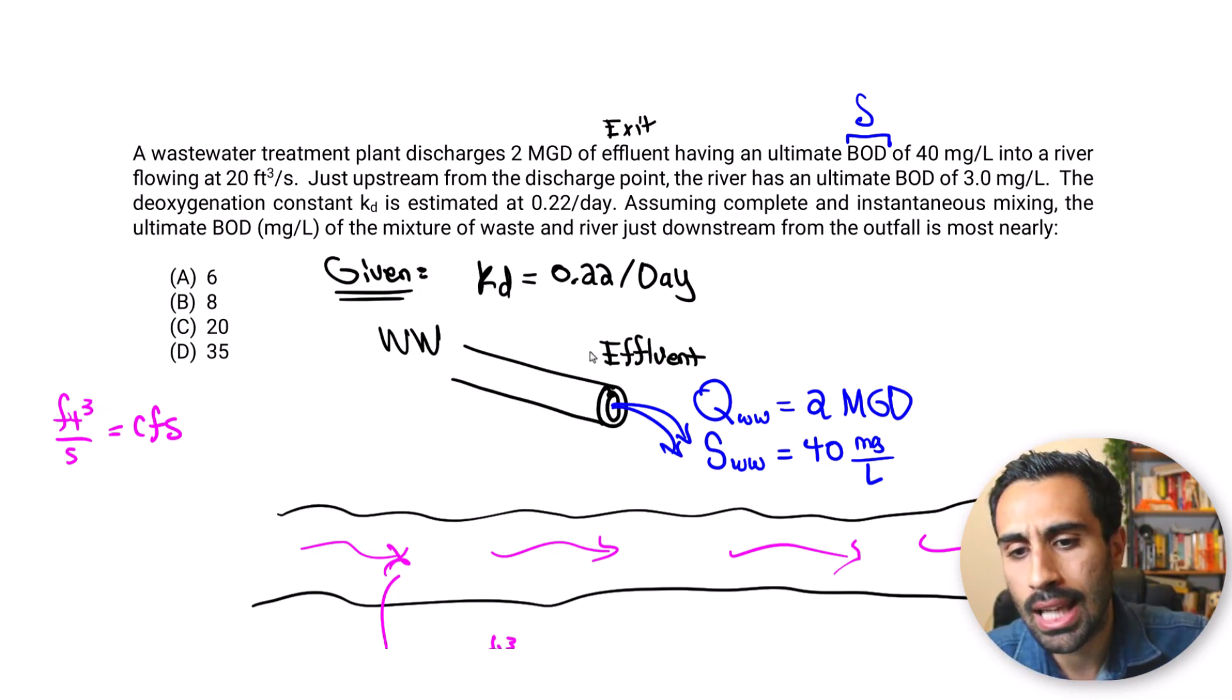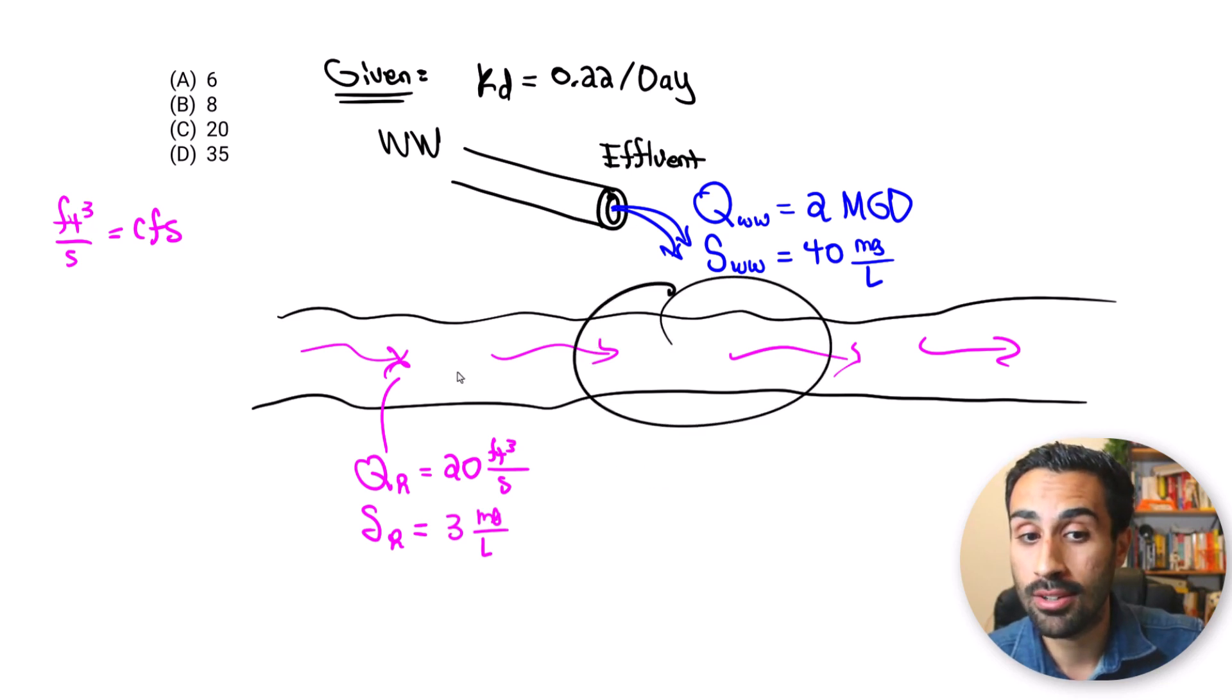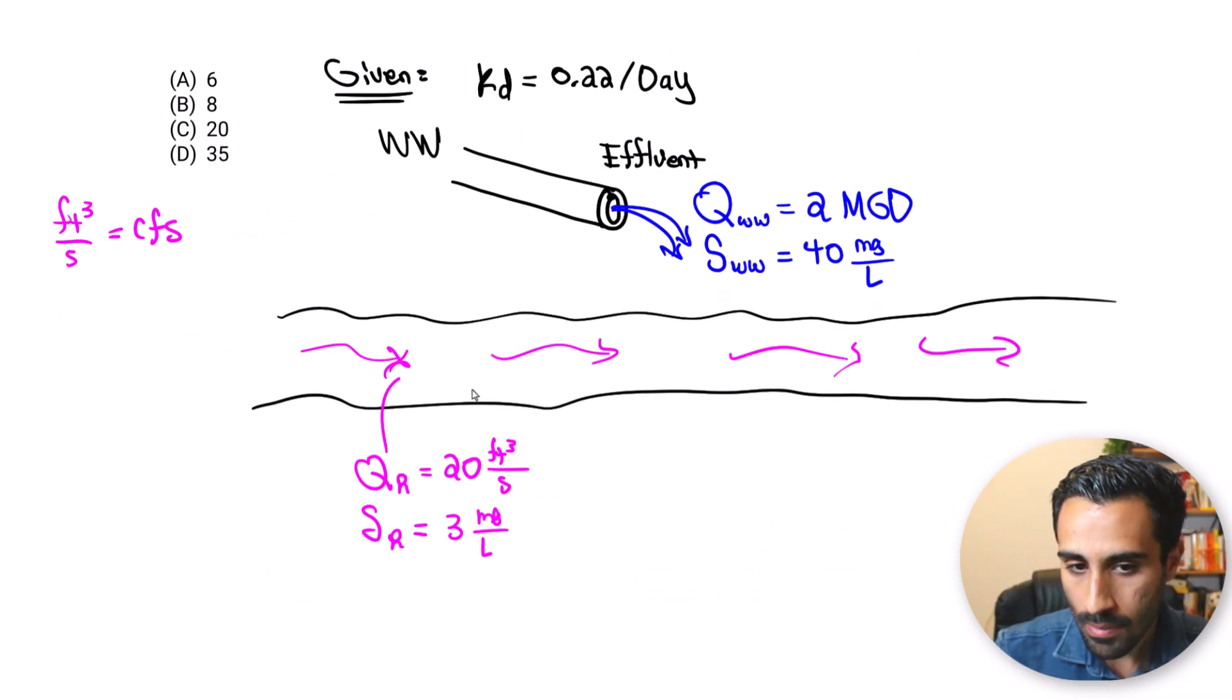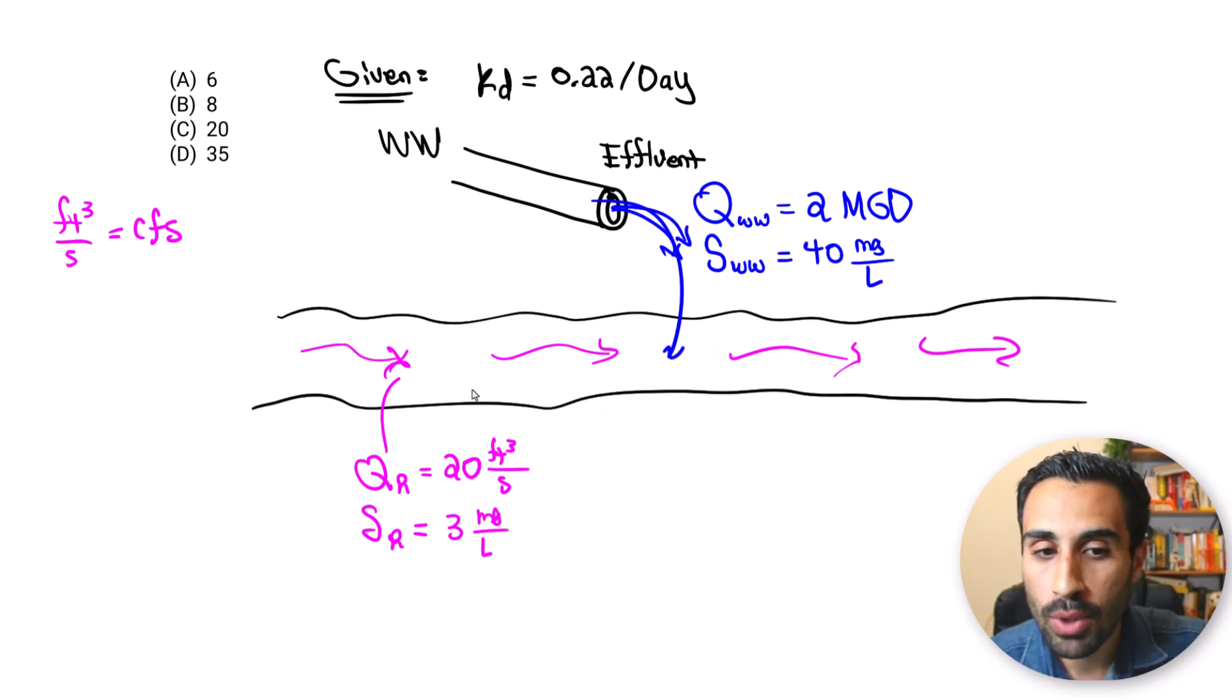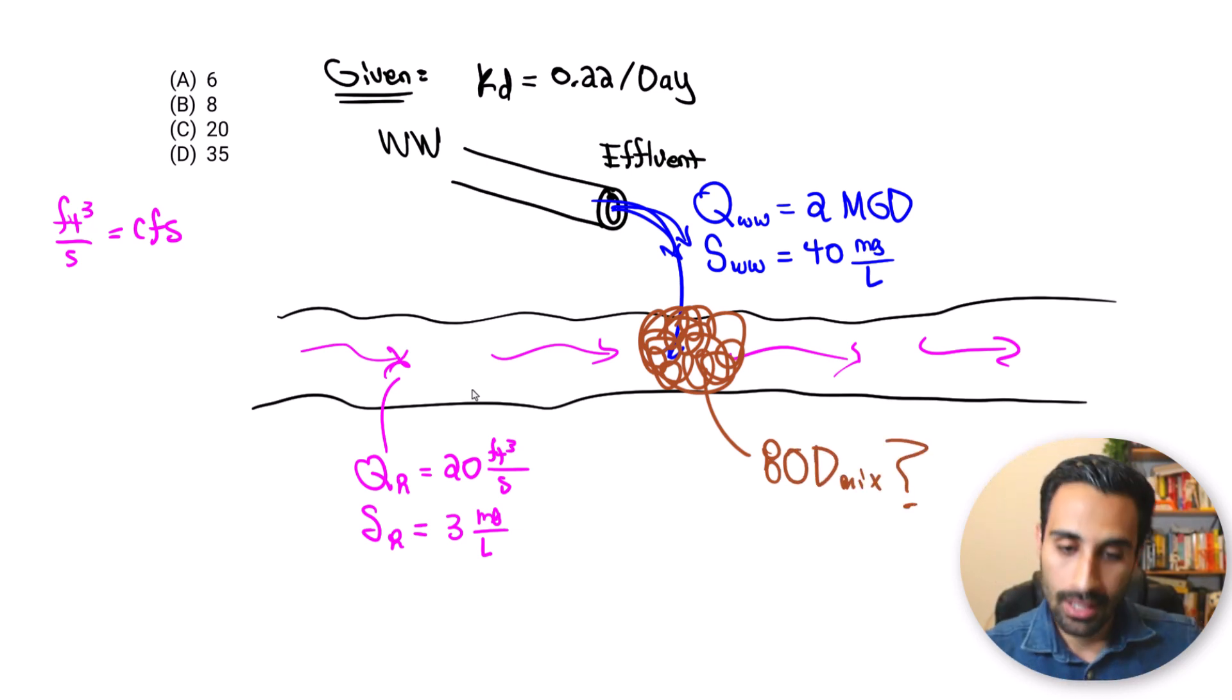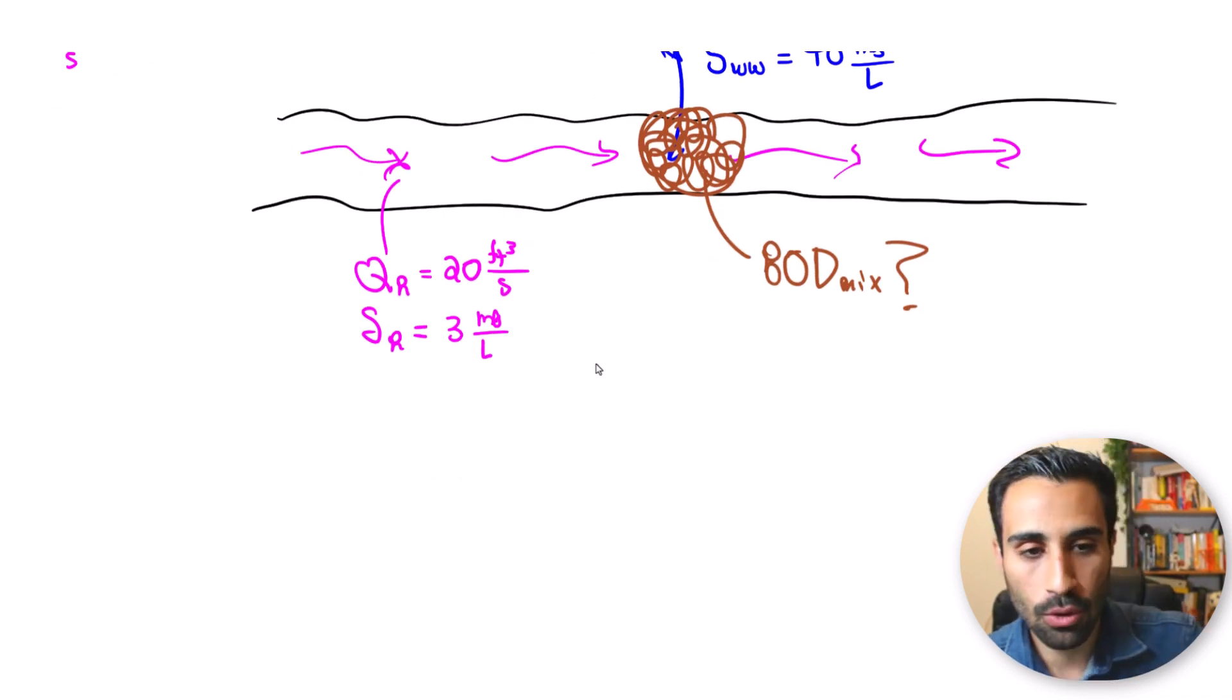So now we will say assuming complete and instantaneous mixing, the ultimate BOD of the mixture of waste and river just downstream from the outfall is most nearly what? We said downstream is with respect to the discharge right here. So what we're trying to do is find the ultimate BOD of the mixture when we have the waste and the river because we know the water that comes out of the effluent goes into the river, it mixes with the river, and then we have a certain BOD concentration, and that's what we're going to find, the BOD of the mix. That's really it. That's what we need to find for this one.